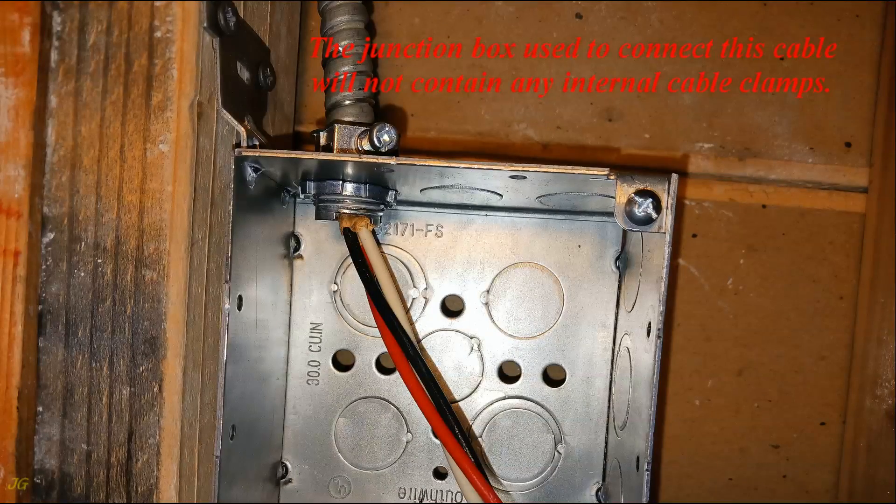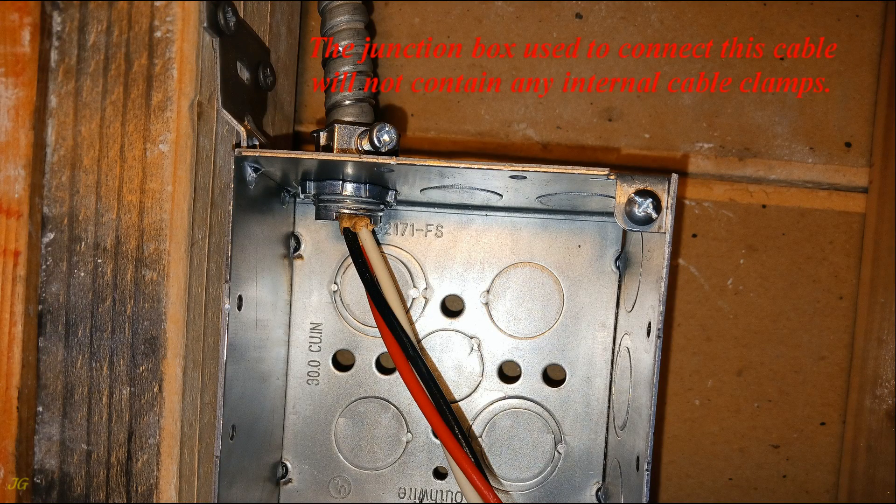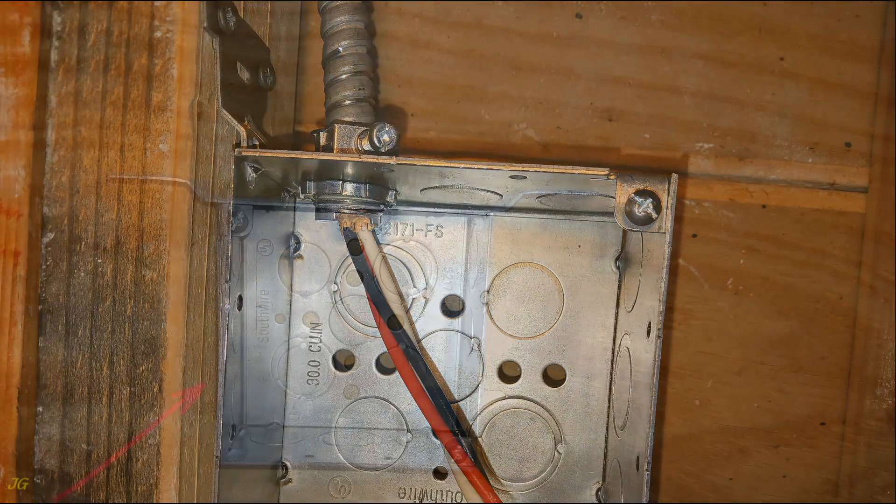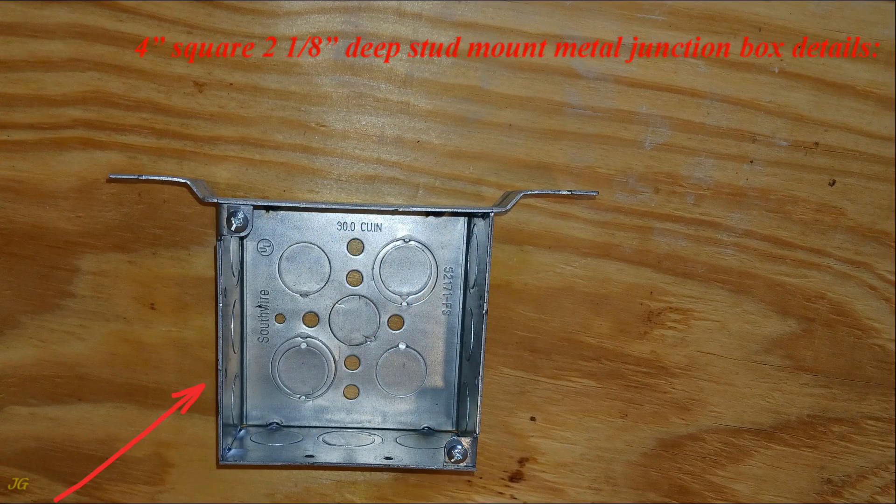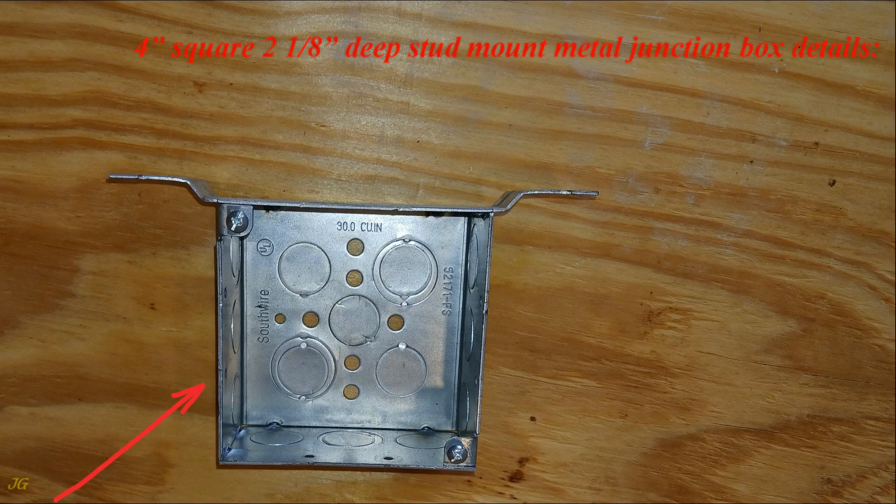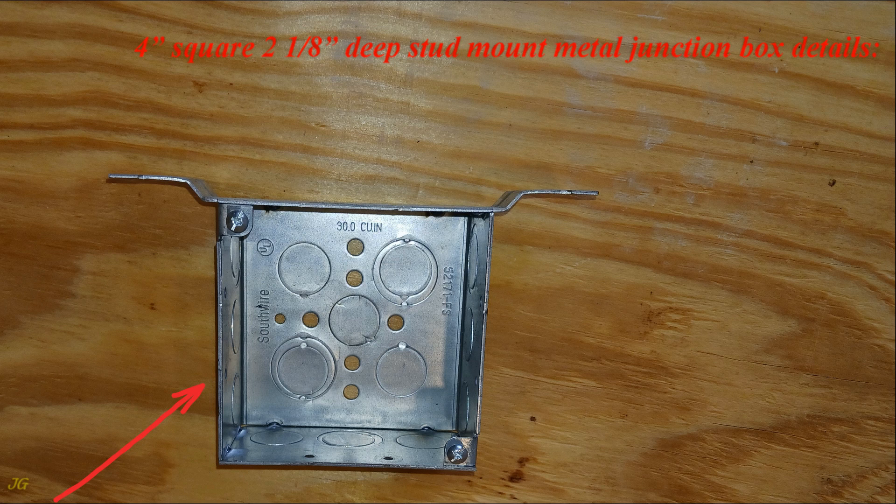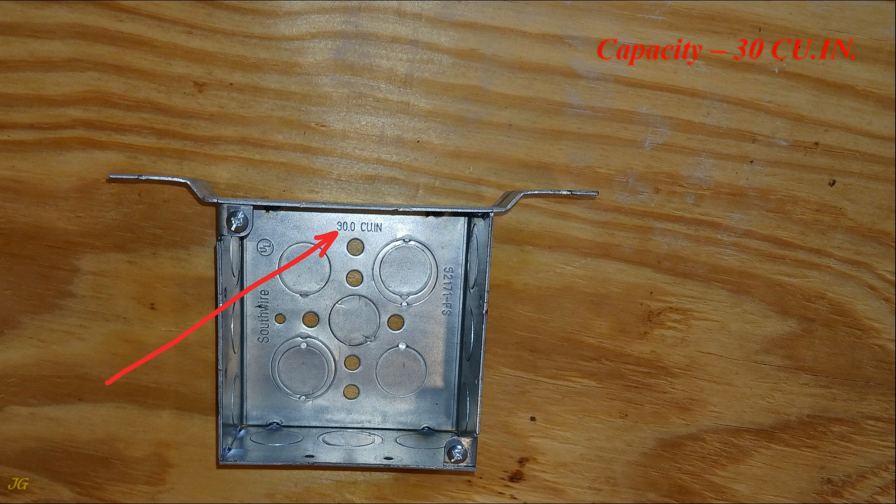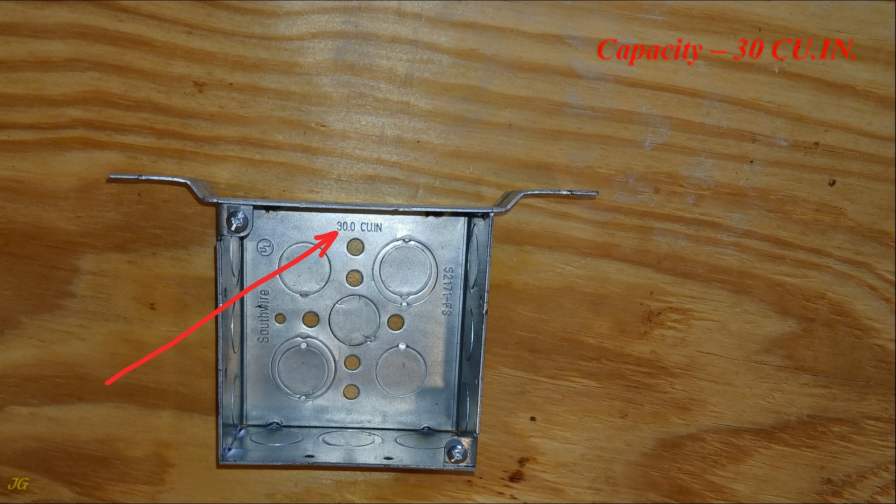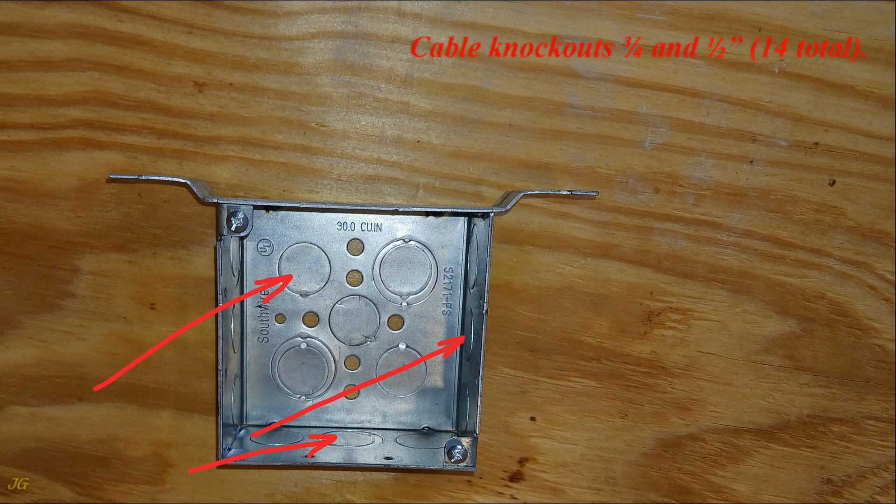The junction box used to connect this cable will not contain any internal cable clamps. 4-inch square 2 and 1/8-inch deep stud mount metal junction box details. Capacity 30 cubic inches. Cable knockouts 3/4 and 1/2 inch, 14 total.